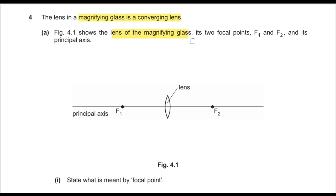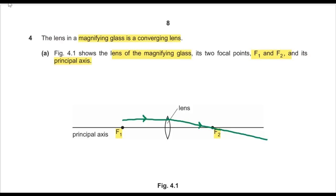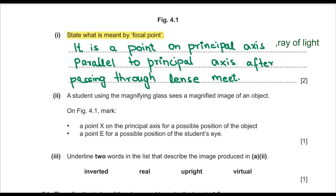Question 4: the lens in a magnifying glass is a converging lens with two focal points F1 and F2 on its principal axis. Part one asks to state what is meant by a focal point. A focal point is a point on the principal axis where rays of light parallel to the principal axis converge after passing through the lens and meet.